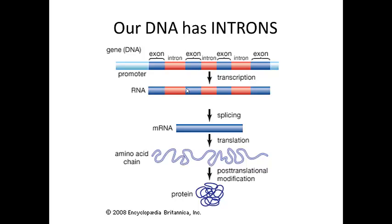What happens then is there is a spliceosome — a complex of RNA and protein — which splices out the introns. Those introns are removed, digested, and the RNA nucleotides are recycled. Then we have mRNA ready to be translated, and that mRNA is now allowed to leave the nucleus, where it codes for an amino acid chain. The ribosome reads it, makes an amino acid chain, and that leads to the protein.